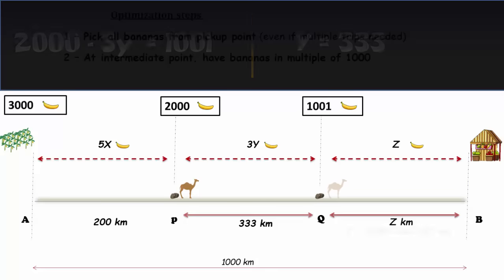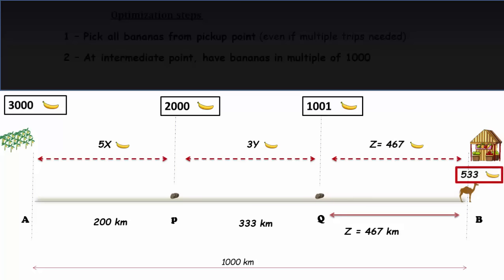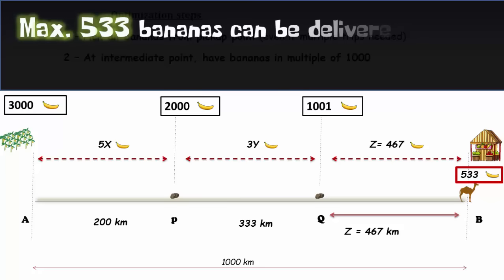Now finally, the remaining distance to the market is 1000 minus 200 minus 333 that's equal to 467. So the camel can be loaded with 1000 bananas and it covers the remaining distance of 467 kilometers and it eats 467 bananas on the way. So the remaining 533 bananas are delivered to the market.